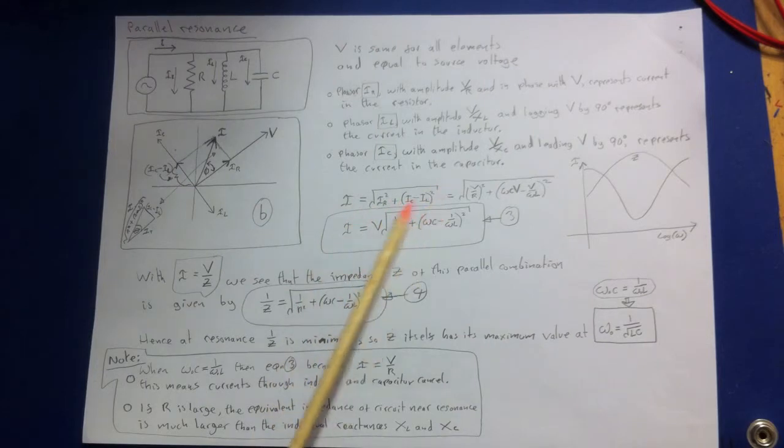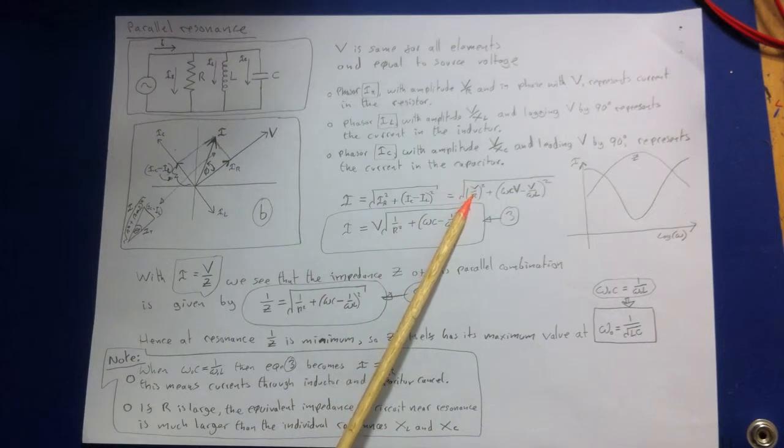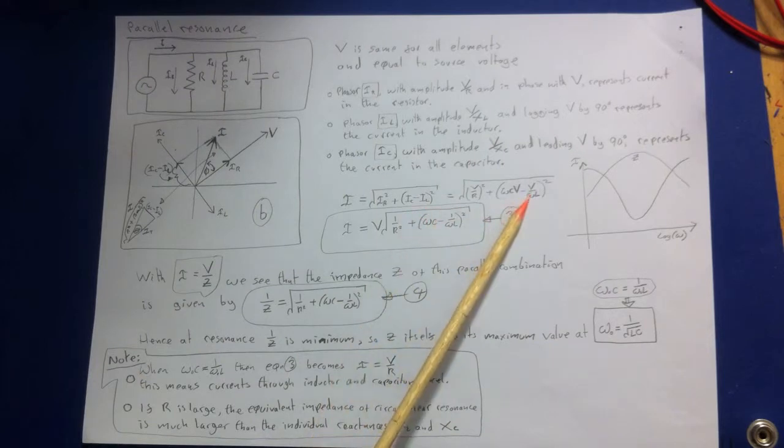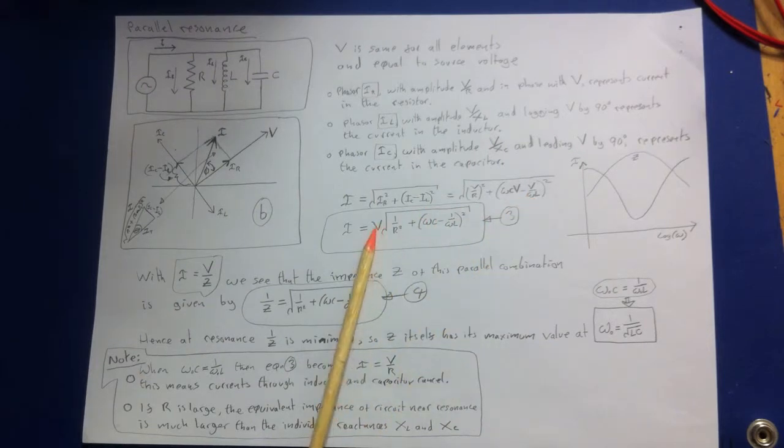So I equals that, and then we can just replace all these values. So I-R is capital V over R, I-C is WC capital V, and I-L is V over WL. And we've taken the V outside here.